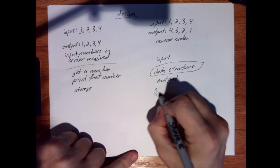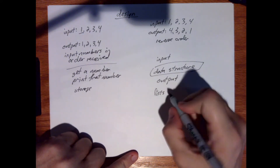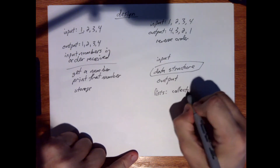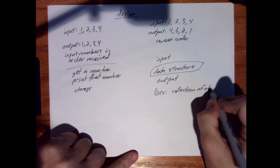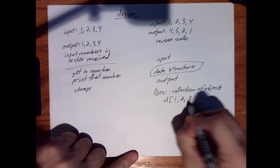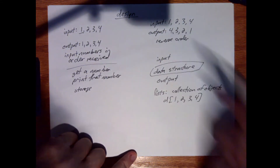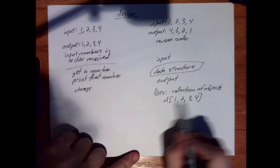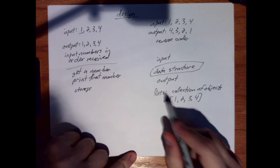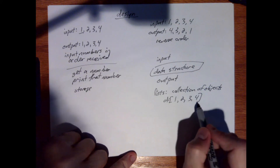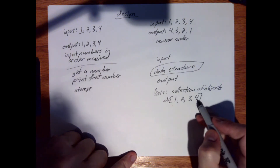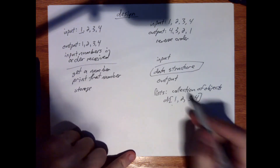Given this input and wanting this output, what data structure lends itself to this problem? We've seen lists — in Python terms, a collection of objects. For the reverse-order problem, a list like D = [1, 2, 3, 4] is useful because there's a reverse method, or you can just access from the end and work back. This is well-suited to this problem.